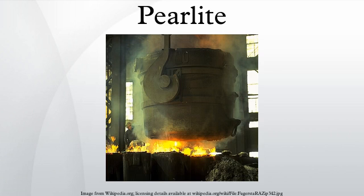In an iron-carbon alloy, during slow cooling pearlite forms by a eutectoid reaction as austenite cools below 727 degrees Celsius. Pearlite is a microstructure occurring in many common grades of steels.